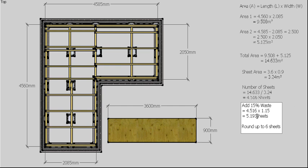Obviously I can't buy 0.193 of a sheet, so I'm going to have to purchase 6 sheets — although I'm not going to use a lot of that last sheet. So if I've got a bit of scrap or spare from another job back at my house or office, I could use that. Let's have a look at where those 6 sheets are going to go.